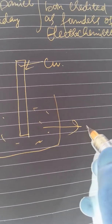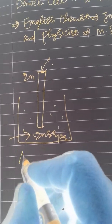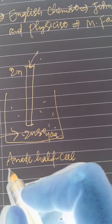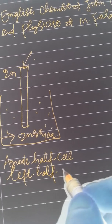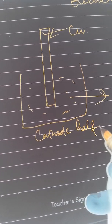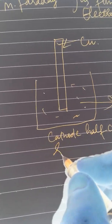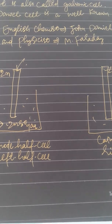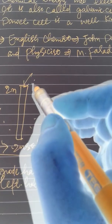The copper electrode is dipped in CuSO4 solution. The left half-cell is called the anode half-cell, and the right half-cell is called the cathode half-cell. Together, these two half-cells make up the electrochemical cell, but it is incomplete as yet.